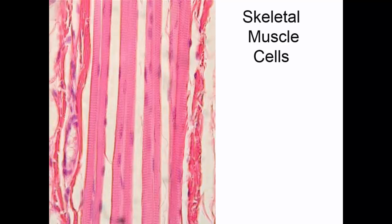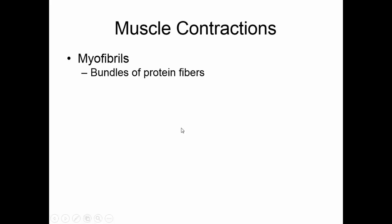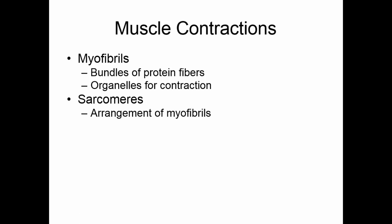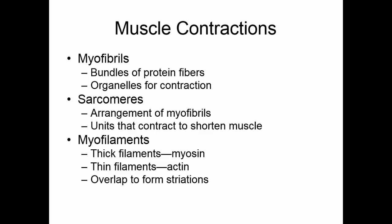As we look at skeletal muscle microscopically, we see several long cylindrical cells. The sarcolemma is the cell membrane of each cell, and the dark spots in each cell are the nuclei — there's more than one nucleus in each cell. You can also see the faint stripes, which are the striations. The myofibrils are bundles of protein fibers that are the organelles for contraction within the muscle cell. The sarcomere is the special arrangement of myofibrils — these are the units that contract to shorten the muscle. The myofibrils are packed with myofilaments, which are proteins. Thick filaments are composed of myosin, and thin filaments are composed of actin.